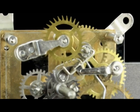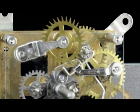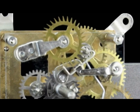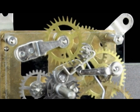The anchor rocks back and forth on the pallet cock post acting like a switch to control the release of power through the escape wheel.